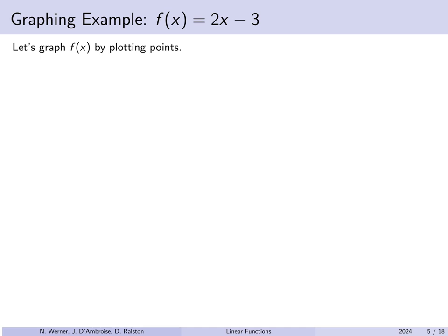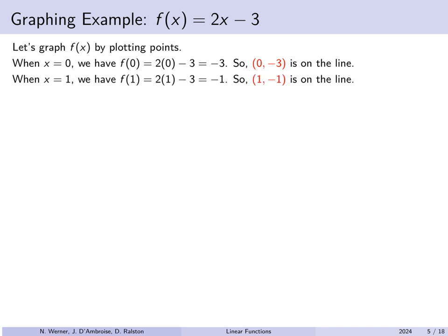Let's graph f of x equals 2x minus 3 by plotting some points. When x equals 0 we find the y-intercept: f of 0 is 2 times 0 minus 3, which is minus 3, so the point (0, −3) is on the line. When x equals 1, f of 1 is negative 1, giving point (1, −1). When x is 2, f of 2 equals 1, so (2, 1) is on the line. Two points are enough to draw a line, but a third point is good practice to check for mistakes.